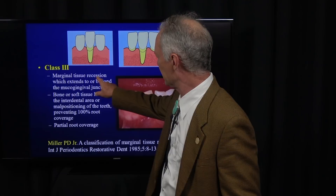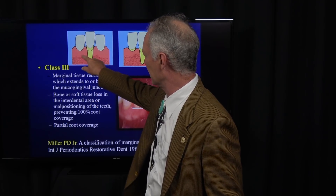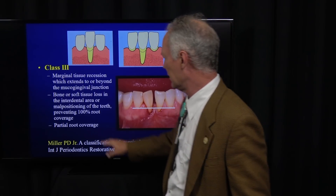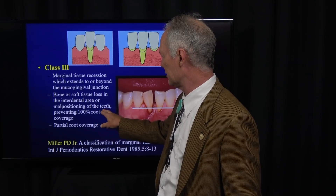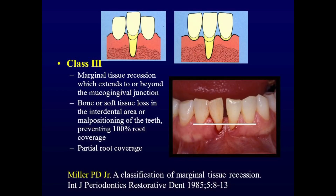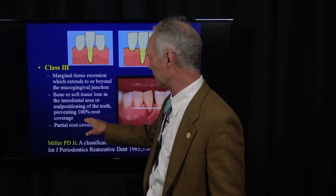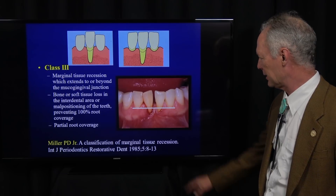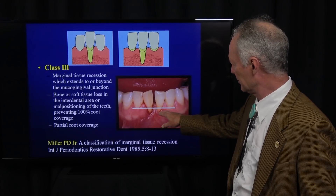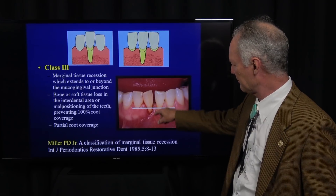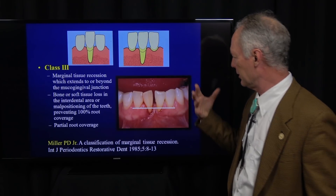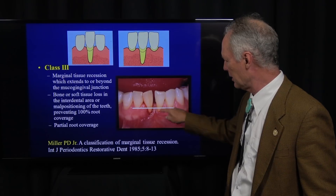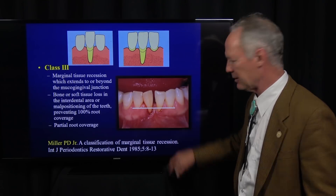Class 3: the marginal tissue recession extends to or beyond the mucogingival junction. Here's the mucogingival junction. Bone or soft tissue loss in the interdental area or malpositioning of the teeth — we've got bone loss and loss of some of the papillary height. So you would not expect 100% root coverage; partial root coverage is expected. You can't expect root coverage past the normal height of the papilla, and you can expect much more root coverage than the height of the interproximal bone.